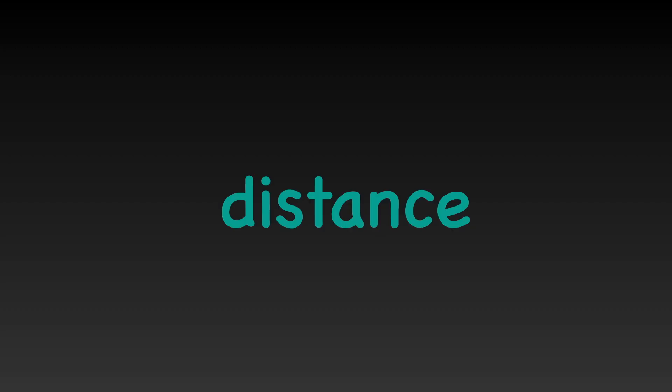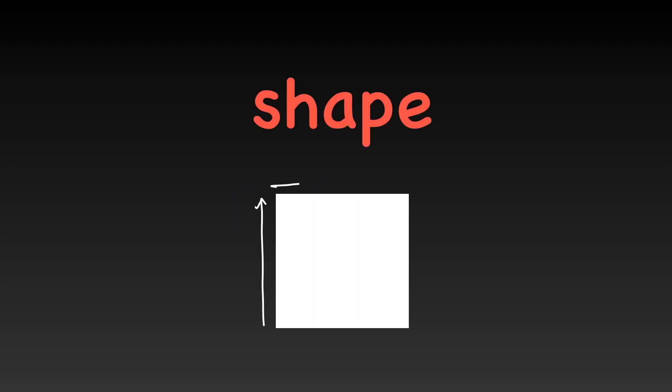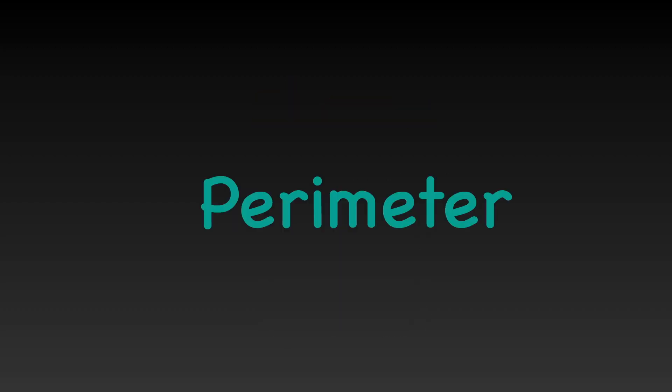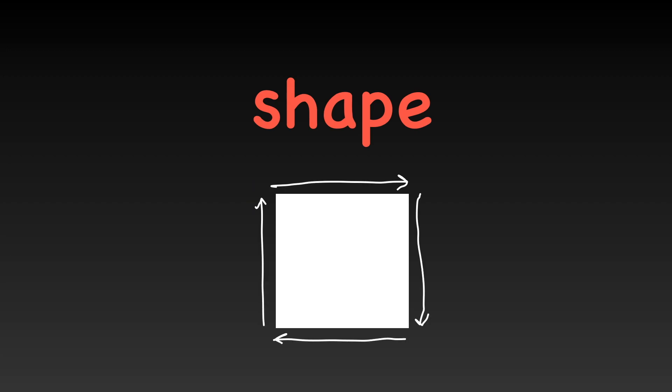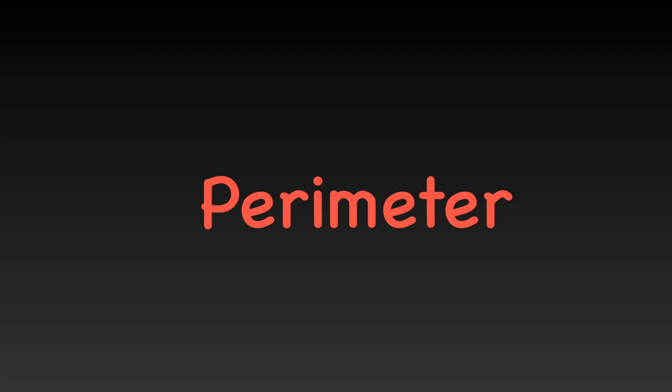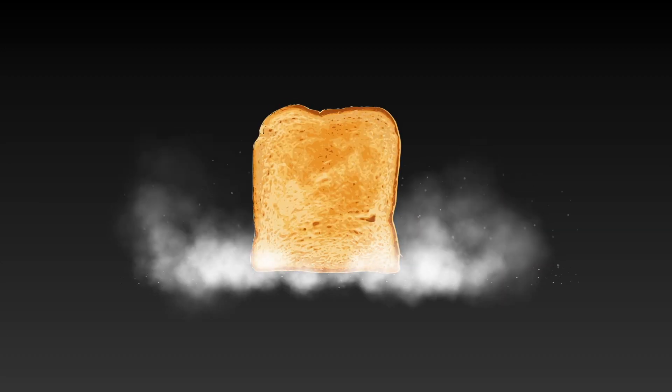Perimeter is the distance around a shape. Perimeter is the distance around a 2D shape. Perimeter on toast.